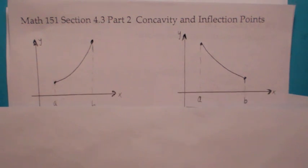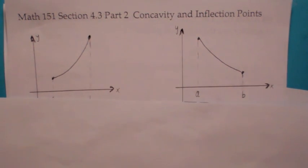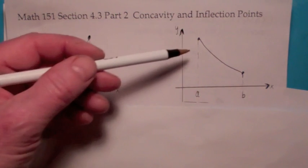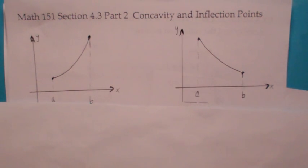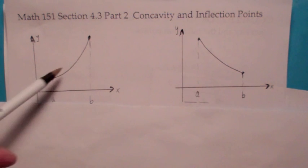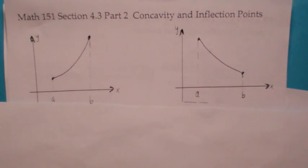Let's look at these first two graphs. We say these graphs are concave up. You could think of concavity — a graph is concave up when it's bending upward. Notice this one is bending upward, and so is this one. A graph that's concave up holds water; a graph that's concave down doesn't.